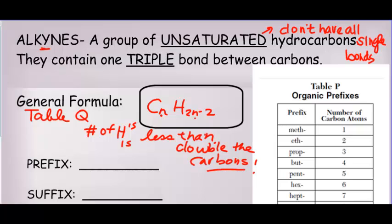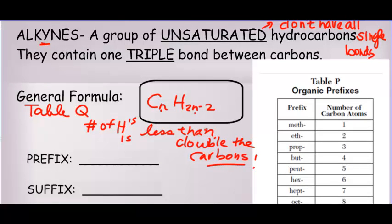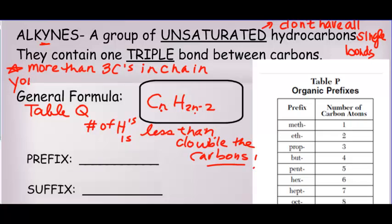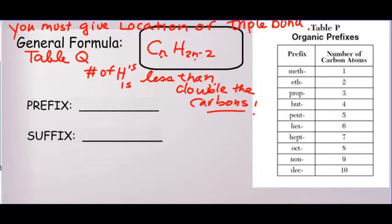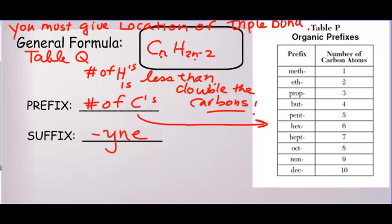An easy way to identify an alkyne: if there are more than three carbons in the chain, you need to indicate the location of the triple bond, just like with the double bond. You must give the location of the triple bond by putting a number in front of its name. Just like alkenes, the prefix is the number of carbons — get that from Table P. The suffix, since these are alkynes, will always end in Y-N-E.